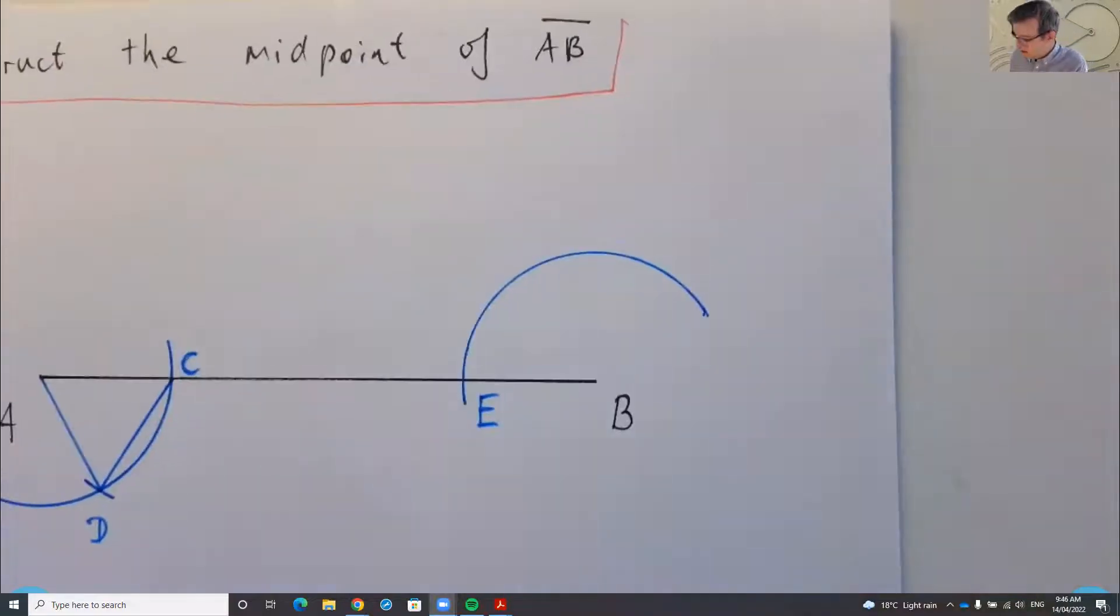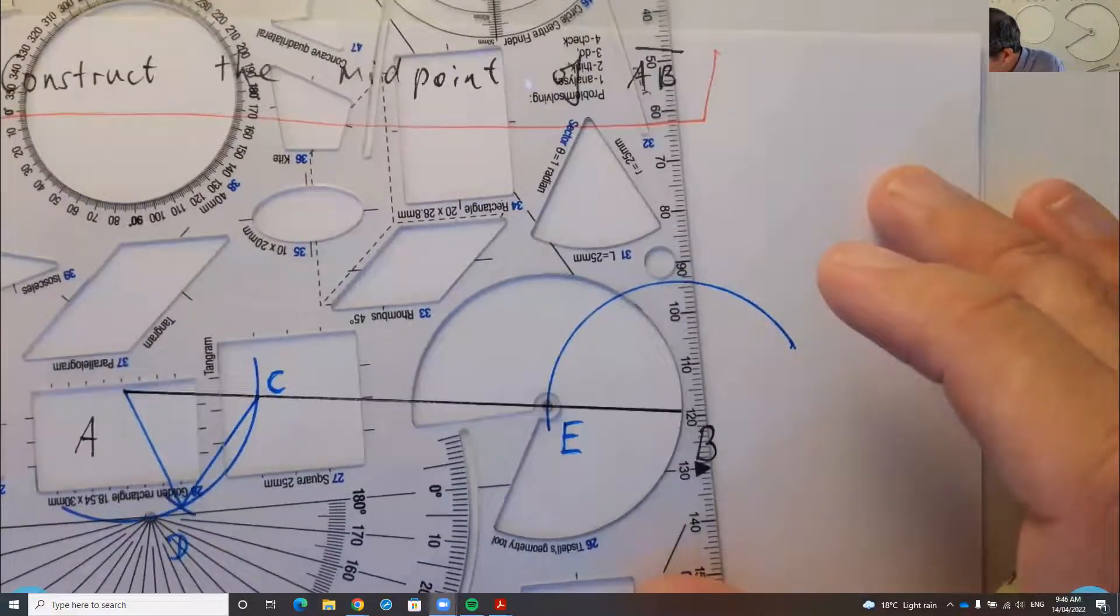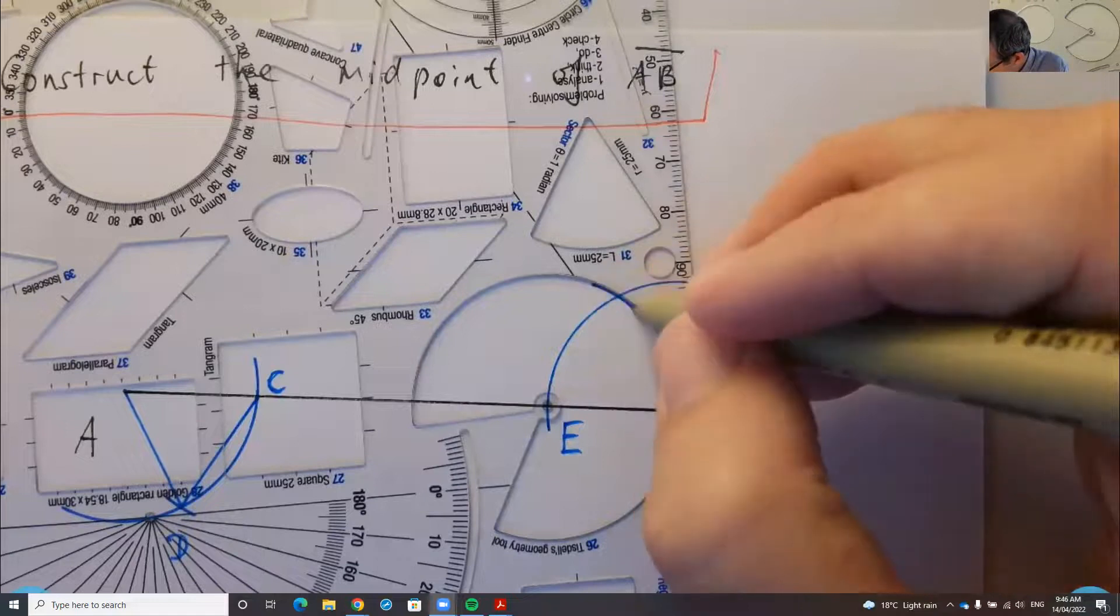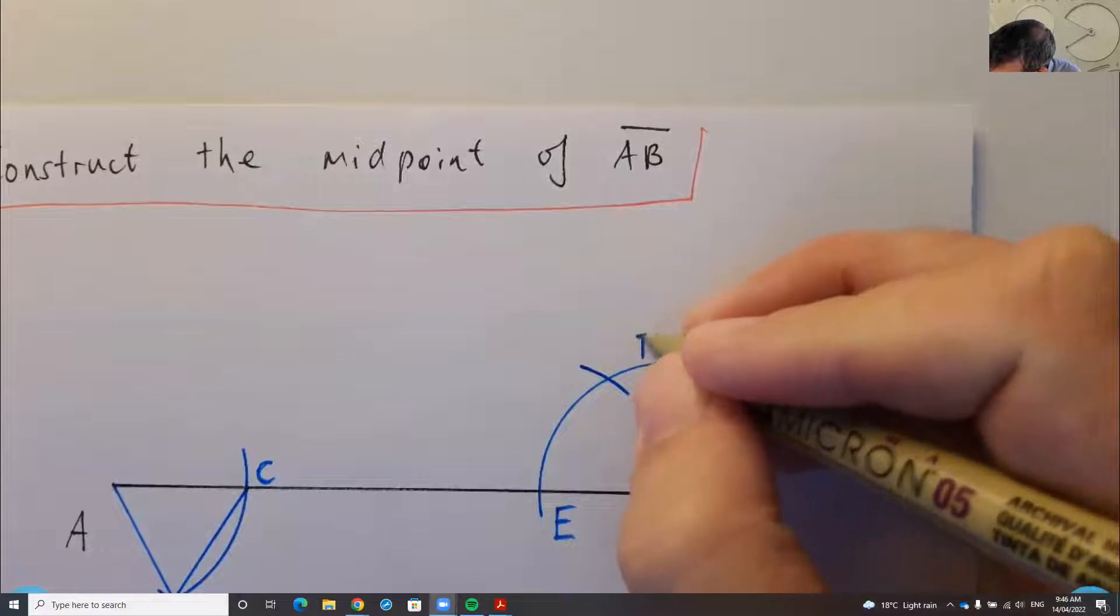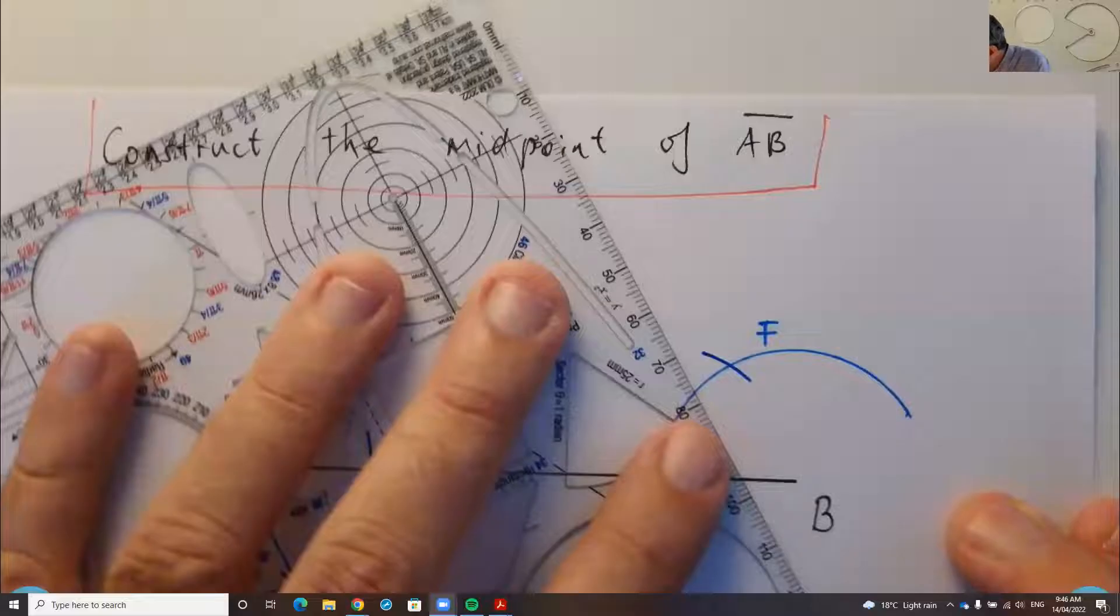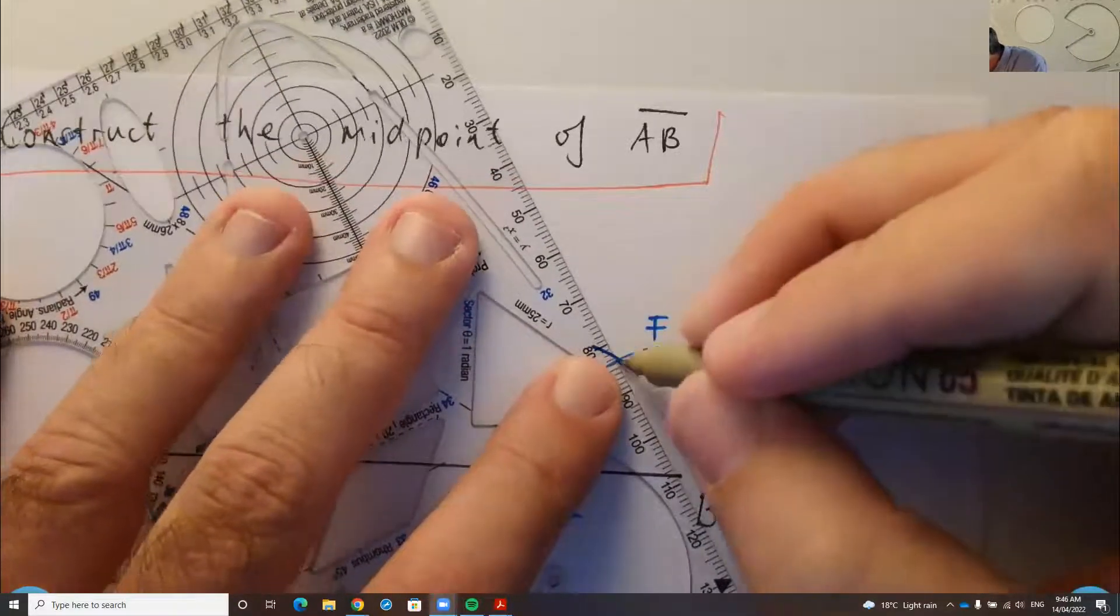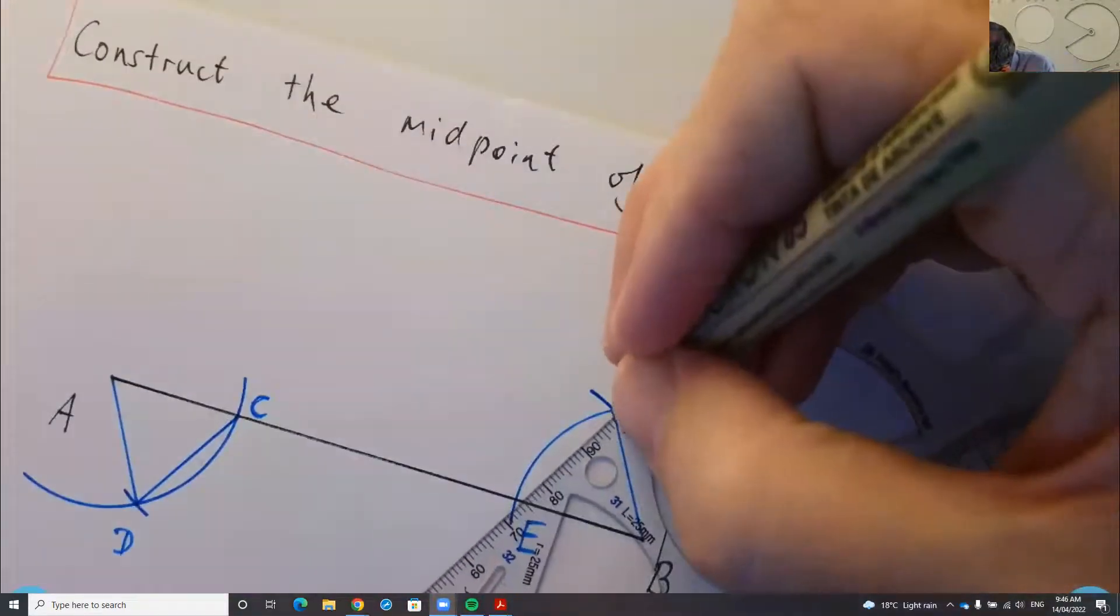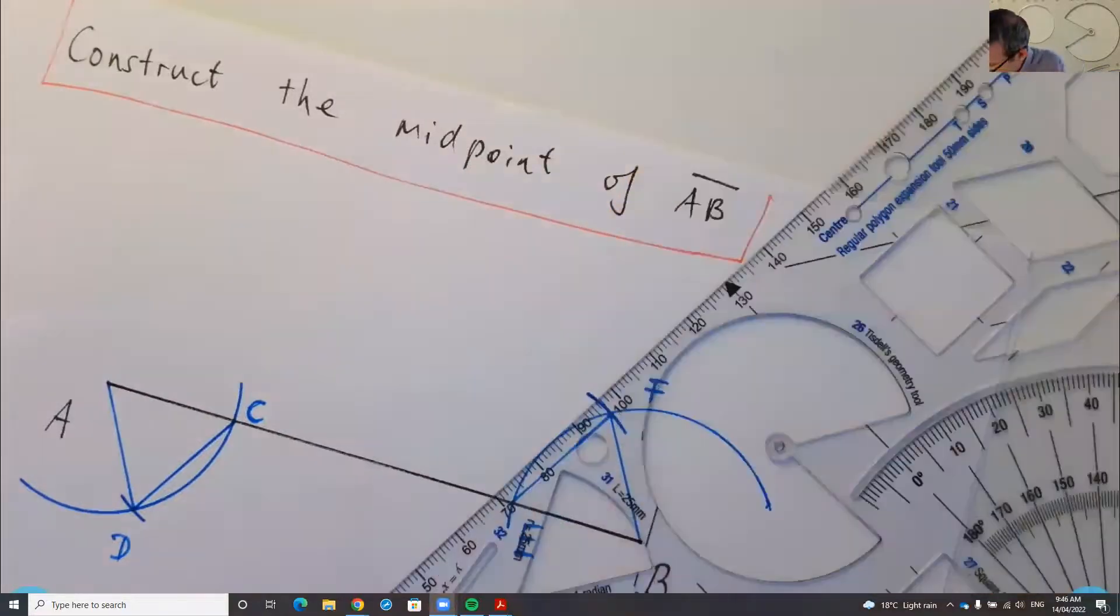And then I'll just repeat the process. So you put the center at this new point E and draw a little arc up here. So let's call that F. And I'll even complete these line segments.